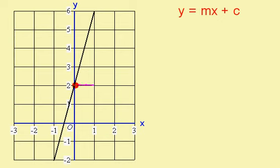The gradient of this line, if I go across 1 to the right here, I have to go up 1, 2, 3, 4. So the gradient is 4, so it's y equals 4x. It crosses the y axis at 2, so it's plus 2.